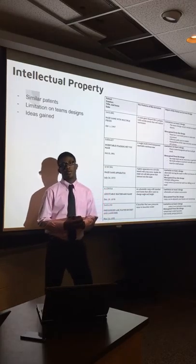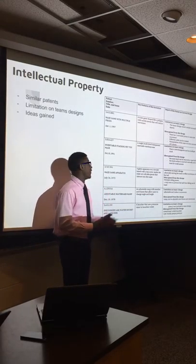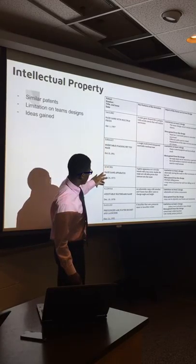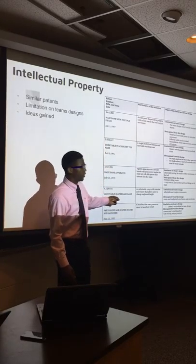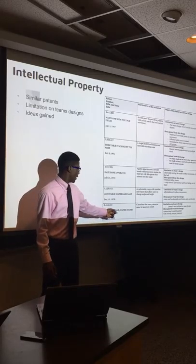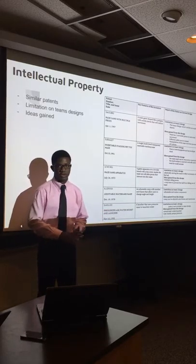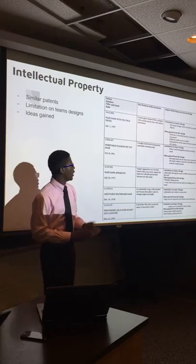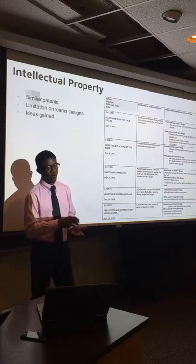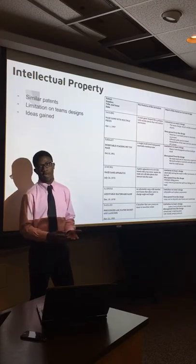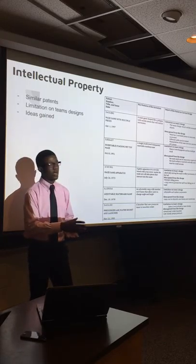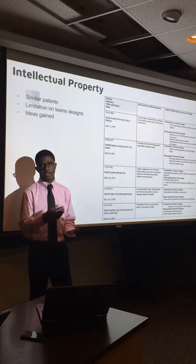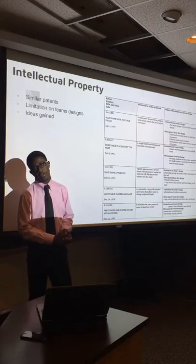For the intellectual property, we found five patents related to our idea. The first three are maze-type patents, the next two are an adjustable ramp, and the last one is a pressurized rocket launcher. These patents gave us similar ideas for stations one and two. We could have movable pieces in the station and create different paths for kids to move the ball through the maze, and we could interchange the mazes so they each have different paths that you can change any time.